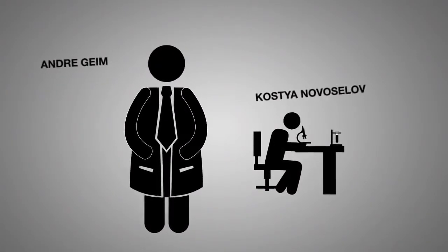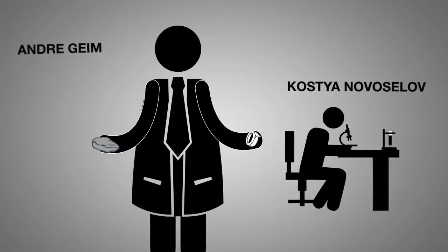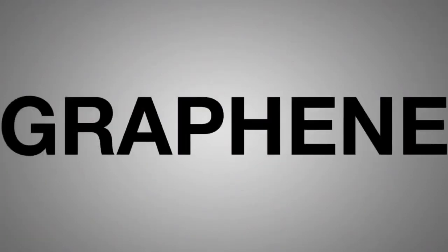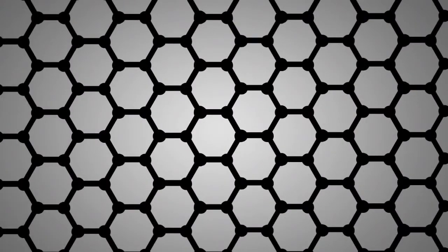In 2004, two Russian scientists used scotch tape and a graphite rock to discover graphene, a layer of atoms arranged in a honeycomb structure.